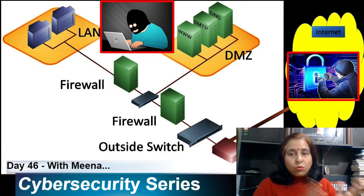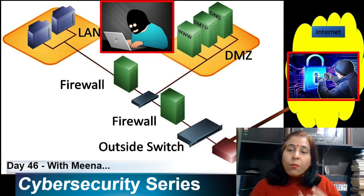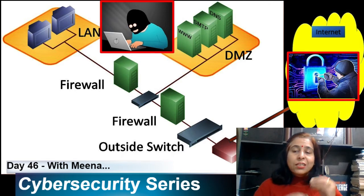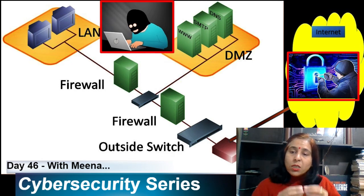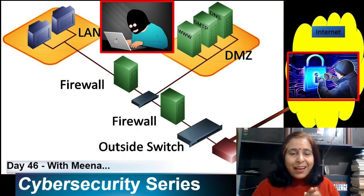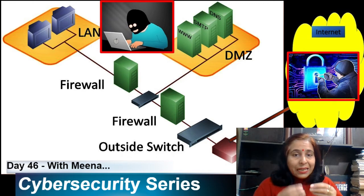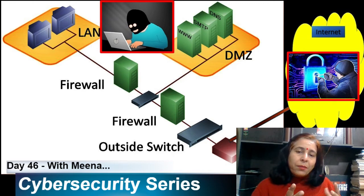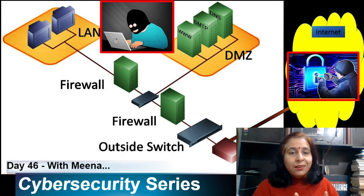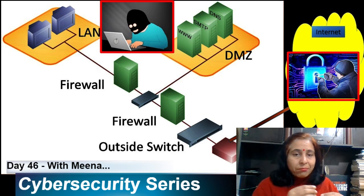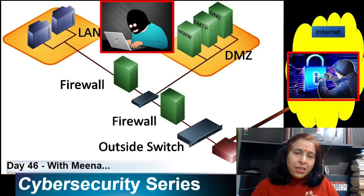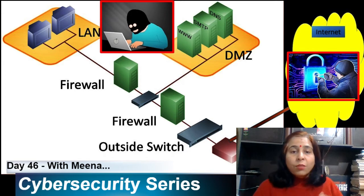Hackers, whether outside or inside the network, first need to collect information about the company — what types of ports are open. Once they find unnecessary ports or ports that can provide enough information to perform an attack, for example by using nmap to scan the network or send requests to firewalls, they look for default banners that provide more information.